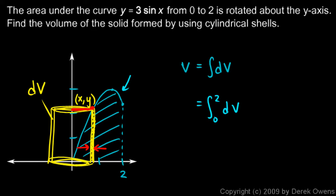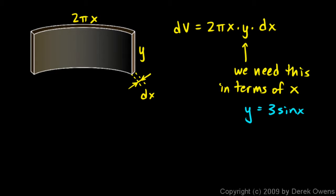If you look back at the original curve here, that's this curve right here, y equals 3 sine x. So whatever point, whatever that x y point is, we know the y value is 3 times the sine of x. So I can write dV is equal to 2 pi x times 3 sine x times dx.